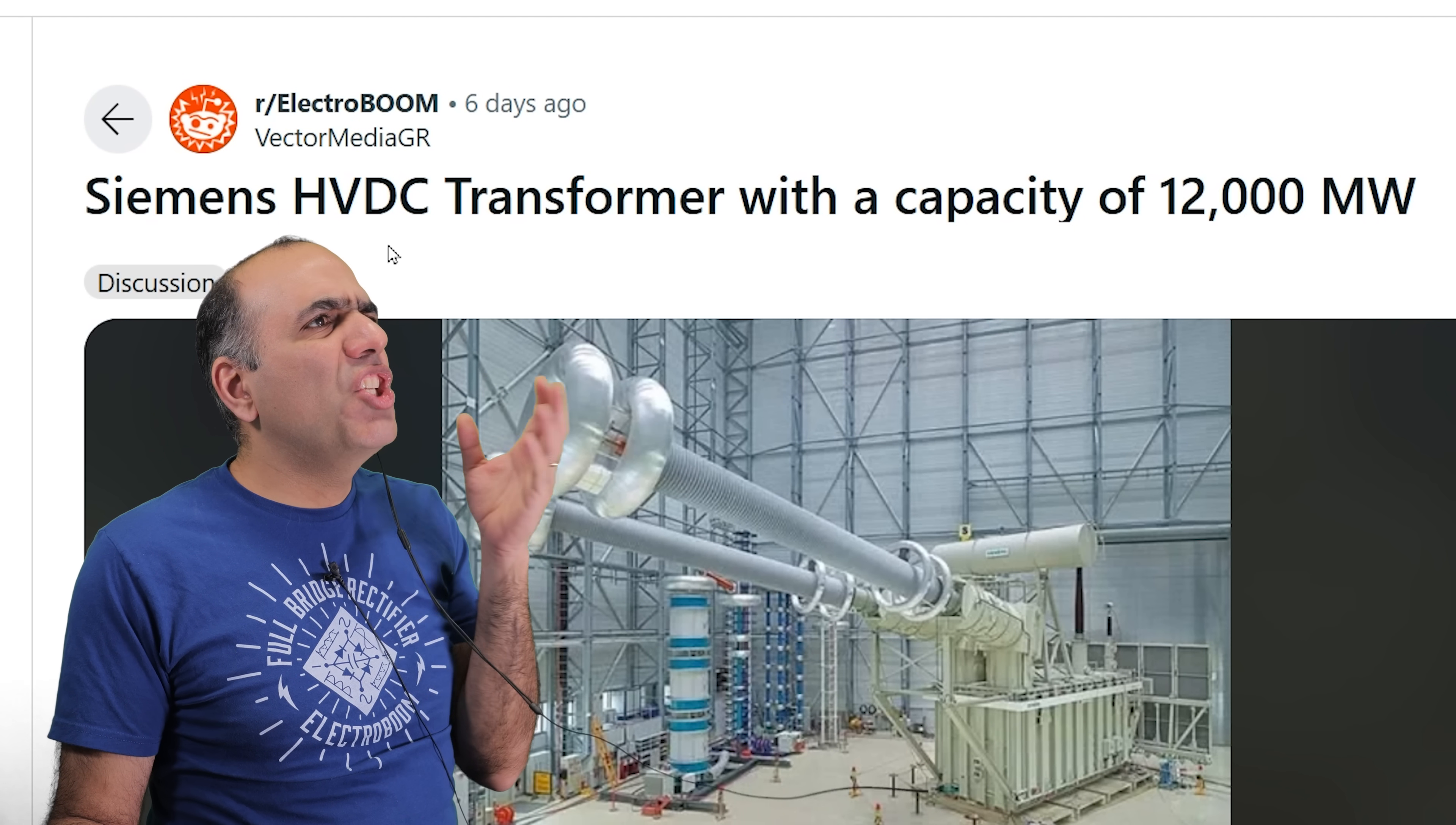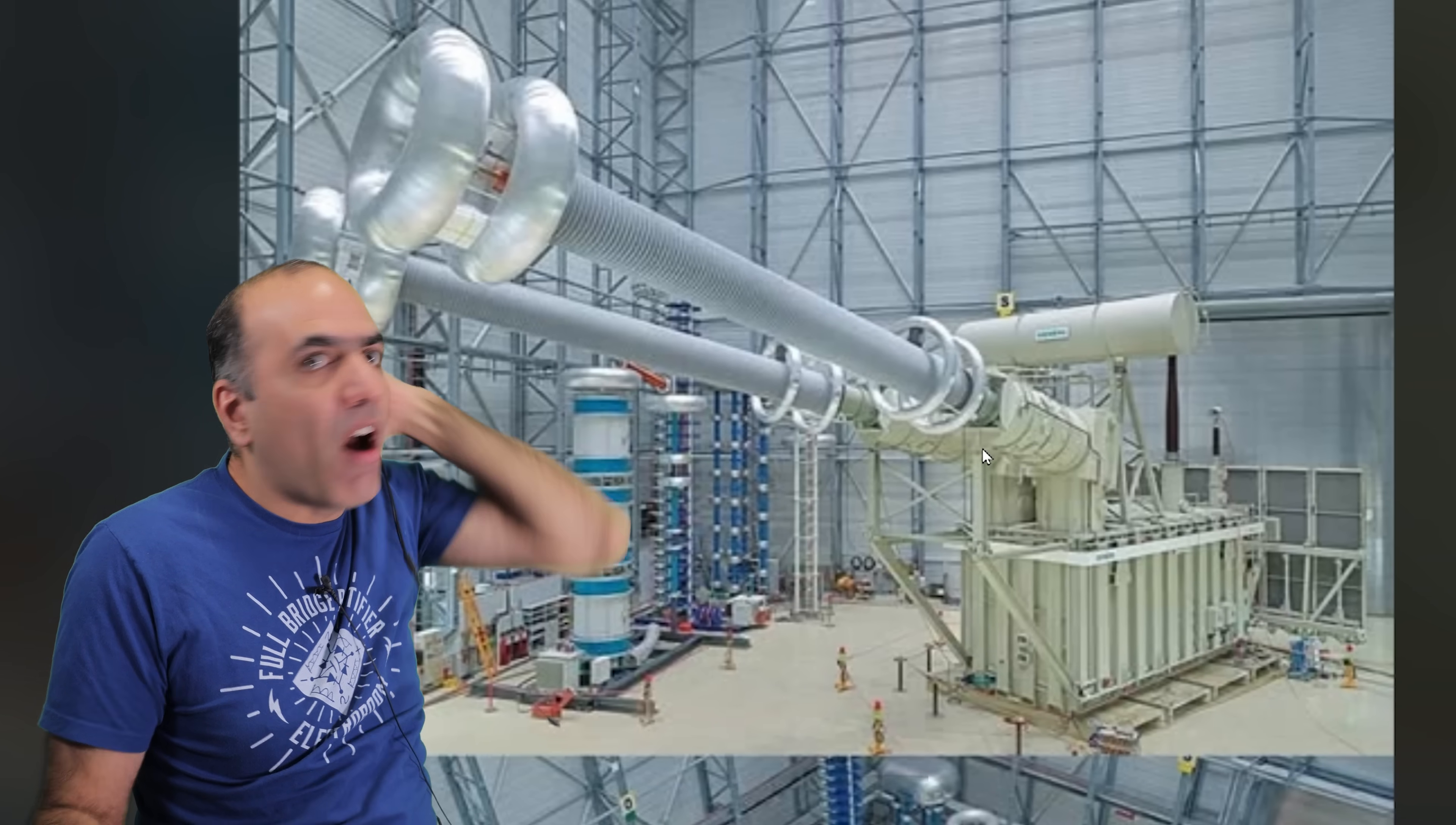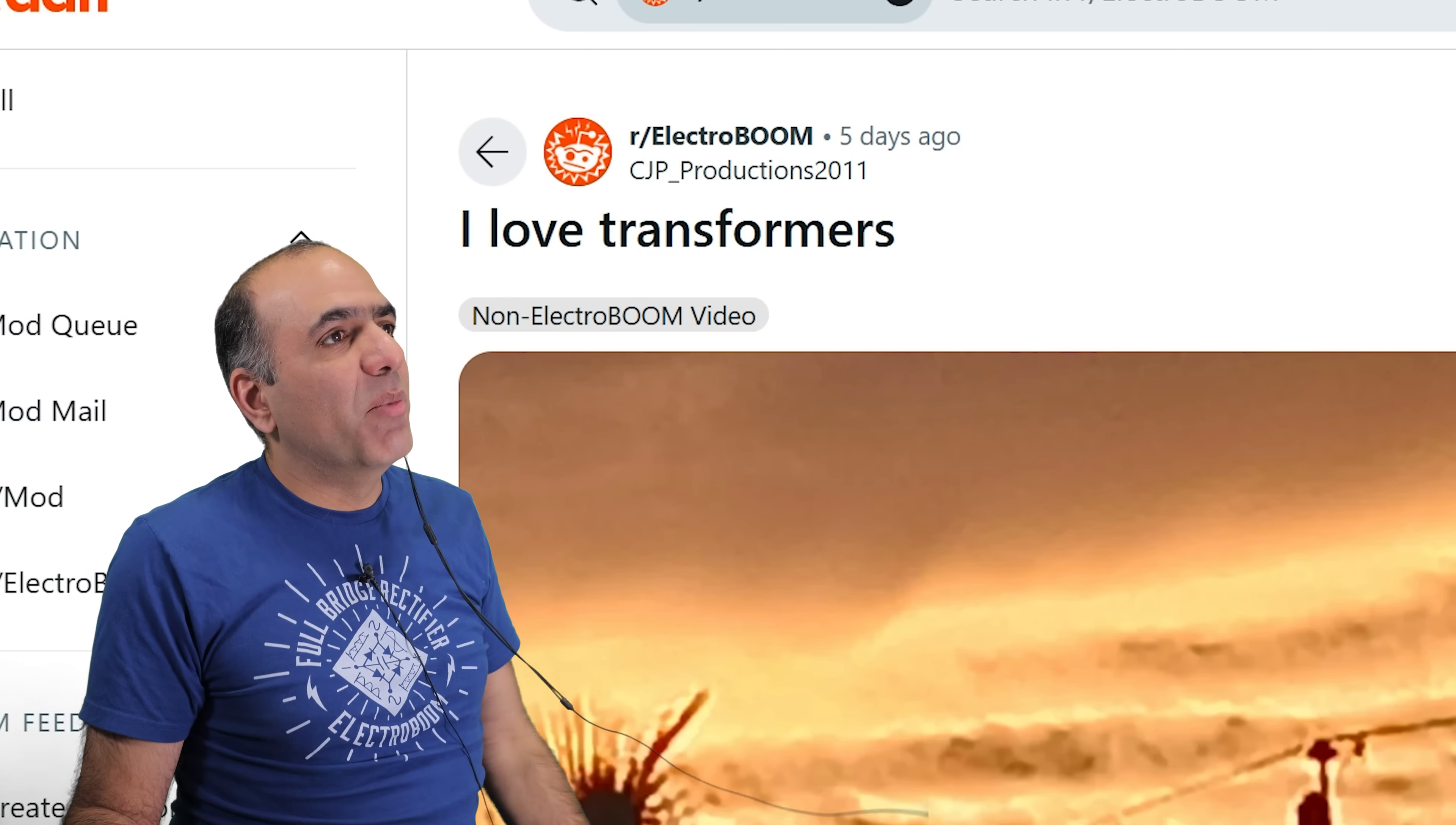Siemens high voltage DC transformer with a capacity of 12,000 megawatts. Dang these stuff are cool. I want to see one of these from up close and you know test it. All the details and considerations for the high voltages not to arc. That's why these things are so huge. They have to keep high voltages apart. Look at those tiny people under it. Wow it's beautiful. A ton of engineering that goes into these things. I barely know anything don't I? I love transformers.